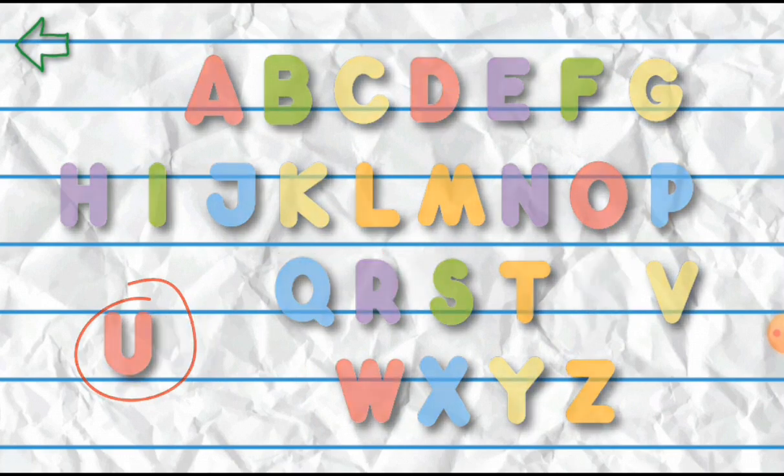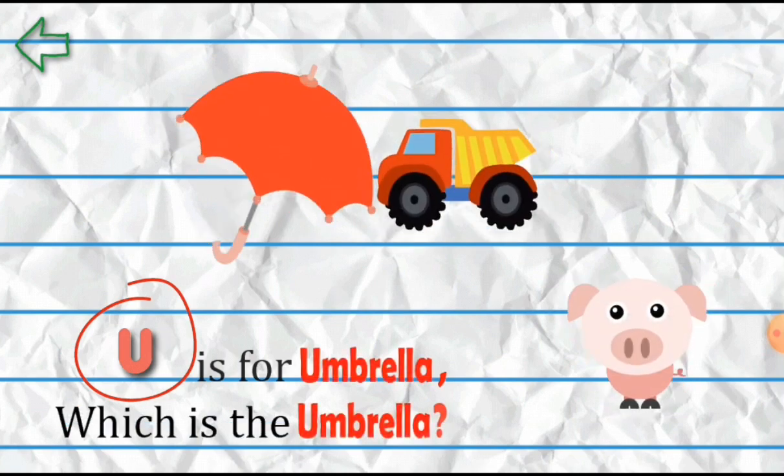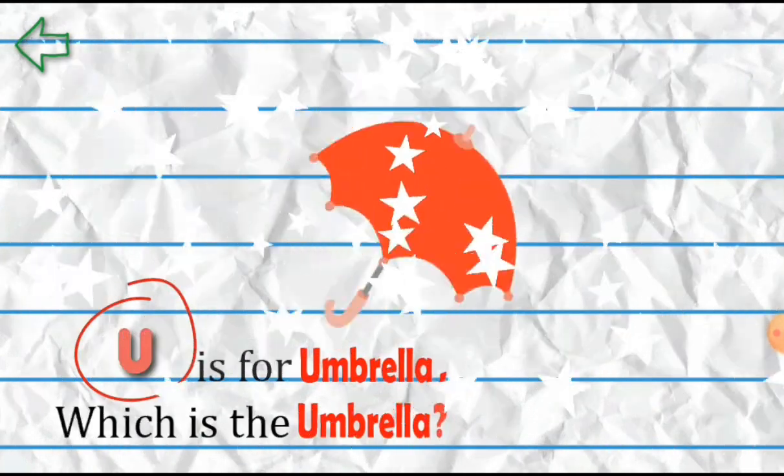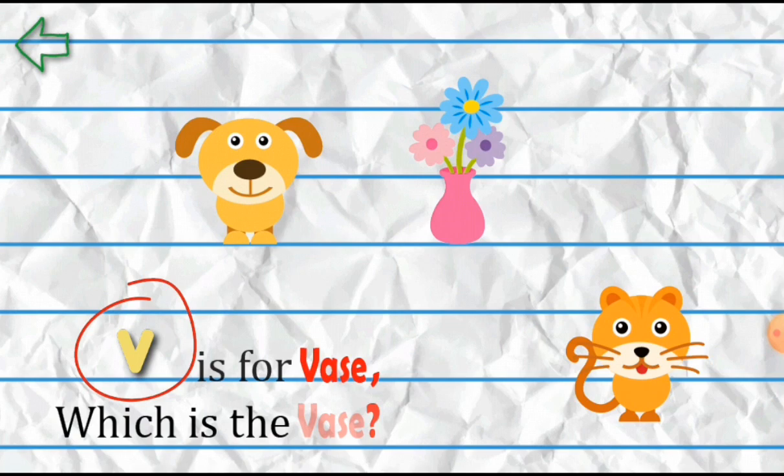U is for Umbrella. Which is the umbrella? V is for Vase. Which is the vase?